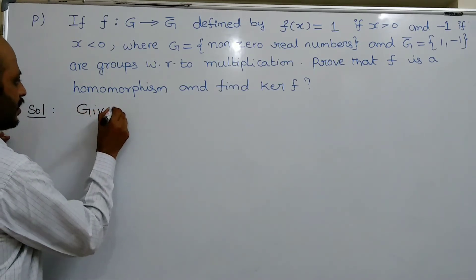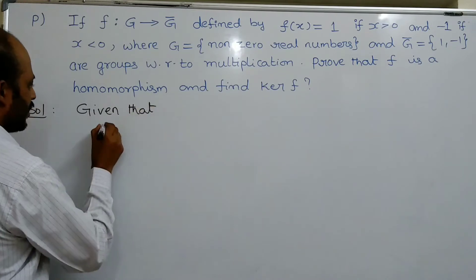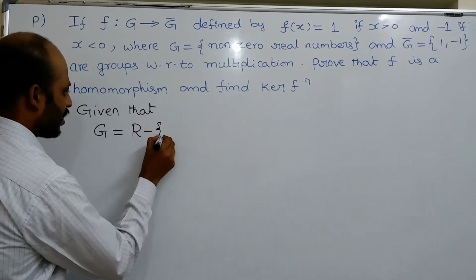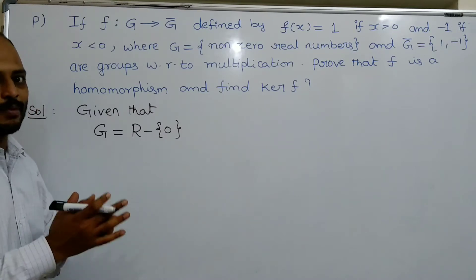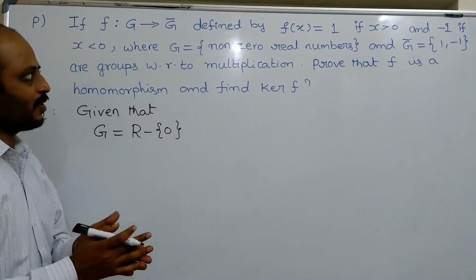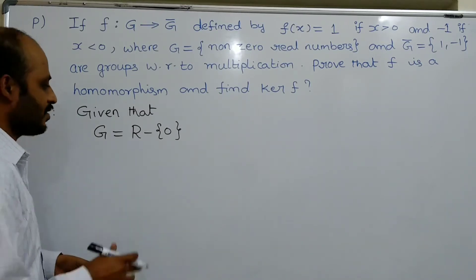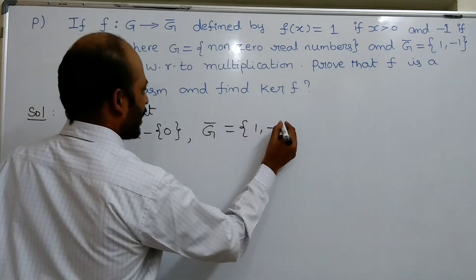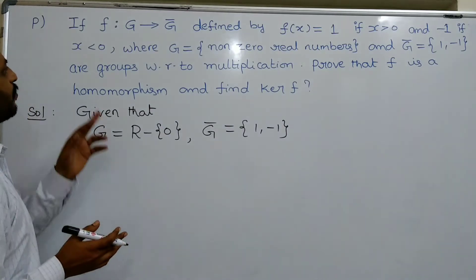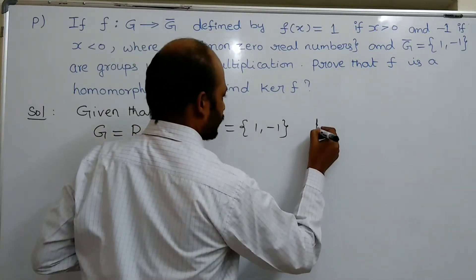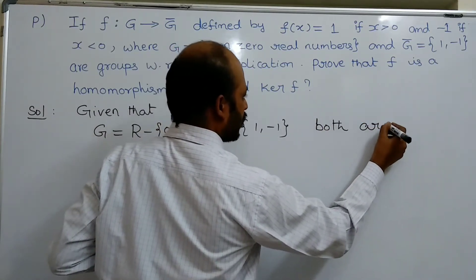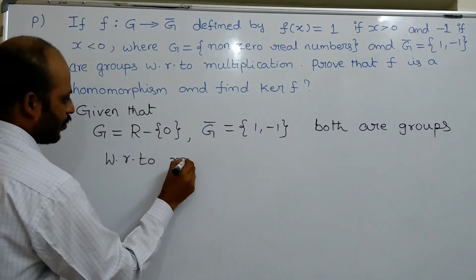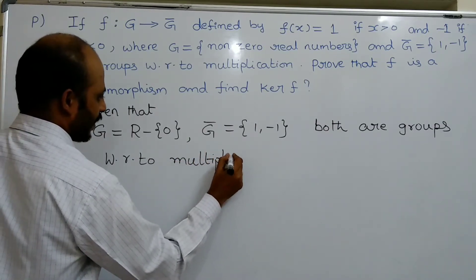Given that capital G is equal to the set of non-zero real numbers, which is ℝ \ {0} — all real numbers other than 0. And Ḡ = {1, -1}. Both G and Ḡ are groups with respect to multiplication.